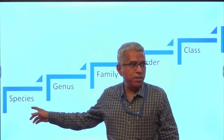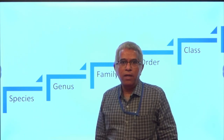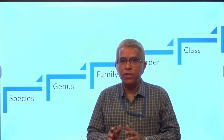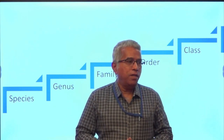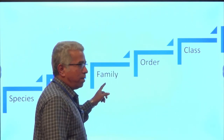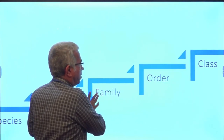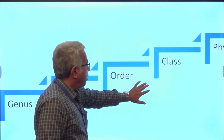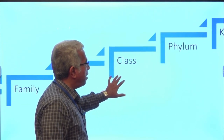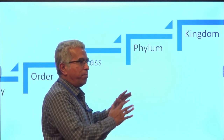Here you can see — species is the lowest taxon, the basic and fundamental unit of taxonomy. Species include organisms with similar morphological, physiological, genetic, and reproductive characters. Related species will form a genus, and related genera will form a family. Related families form an order, related orders form a class, and the related classes are included under one umbrella, namely phylum. And the related phyla will be kept under kingdom.